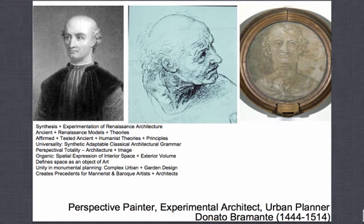As a second-generation Renaissance figure, Bramante had a very clear command of perspectival abilities — seeing things in perspective, drawing the world in perspective. By this point, we're about 40 years beyond Brunelleschi and Alberti, so understanding and constructing space through a perspectival frame is already a norm. Bramante is an expert at this, and interior space, like in Roman architecture, becomes a primary element — expressed both as interior and on the exterior of buildings.